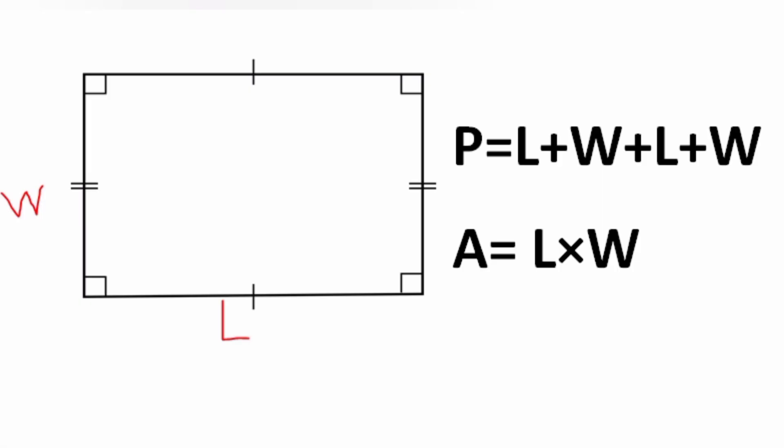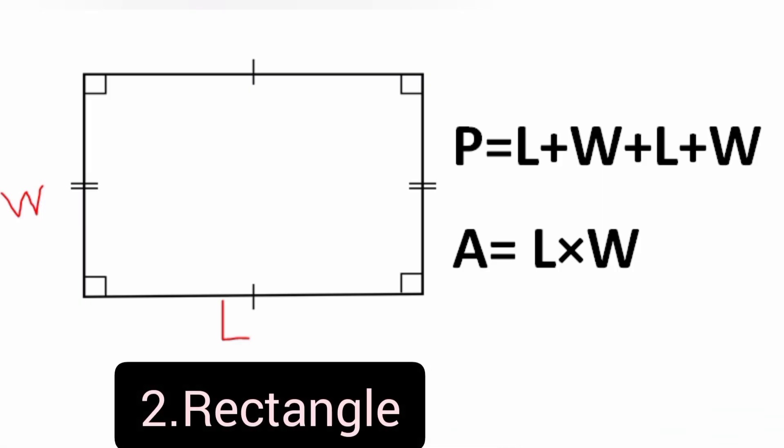Number 2: Rectangle. Rectangle is a quadrilateral with 4 right angles, having length and width. Perimeter of rectangle is equal to length plus width plus length plus width. Area is equal to length times width.